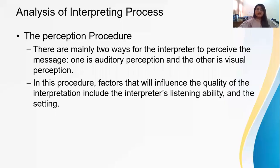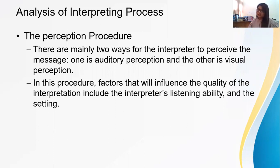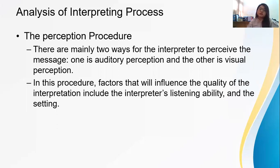This is the analysis of interpreting. There are two main procedures. First, there are mainly two ways for the interpreter to perceive a message: one is auditory perception and the other is visual perception. In this procedure, factors that will influence the quality of interpretation include the interpreter's listening ability and the setting.